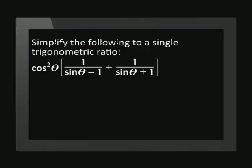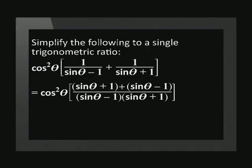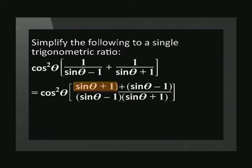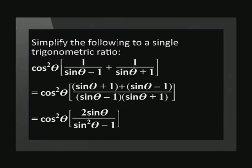Let's start by simplifying the contents of the brackets. Our common denominator is (sin theta minus 1) times (sin theta plus 1). This means that our numerator is (sin theta plus 1) plus (sin theta minus 1). Inside the brackets, we can now simplify to 2 sin theta over (sin squared theta minus 1).